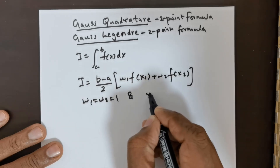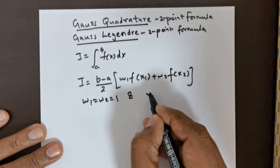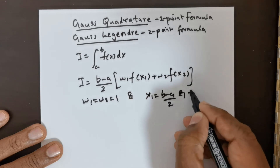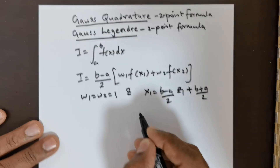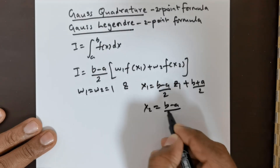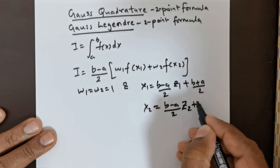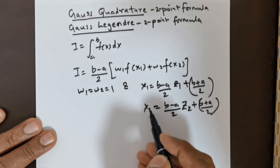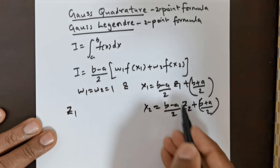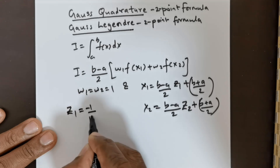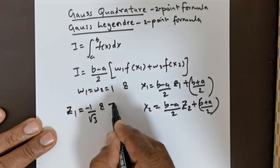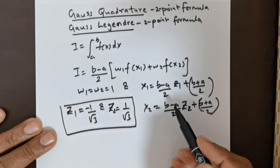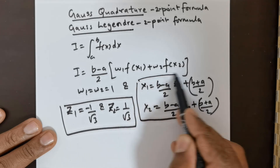The value of x1 is given as (b−a)/2 · z1 + (b+a)/2, and the value of x2 is given as (b−a)/2 · z2 + (b+a)/2. The value of z1 is taken to be −1/√3, and z2 is equal to +1/√3. These are the standard values for the formula.